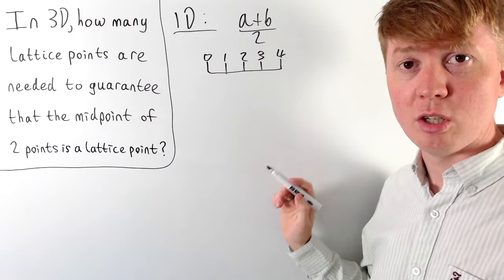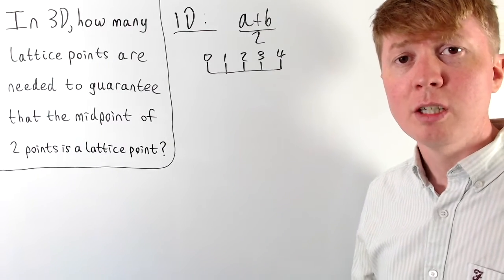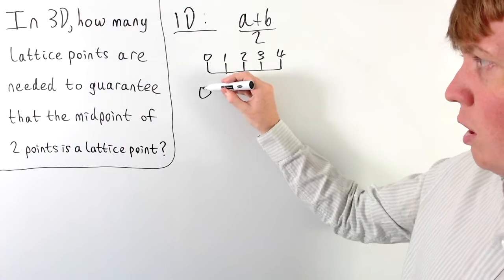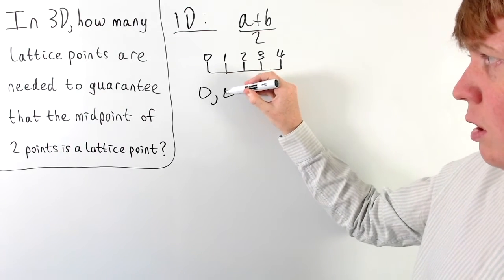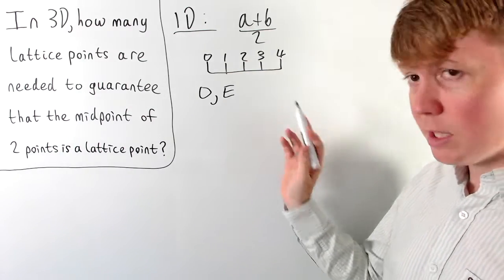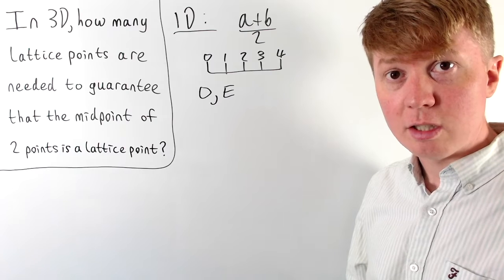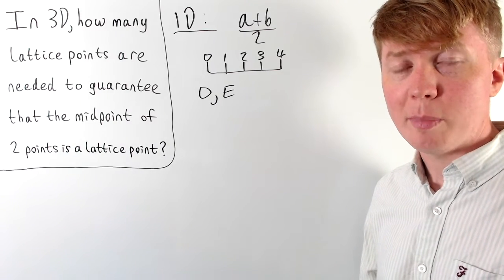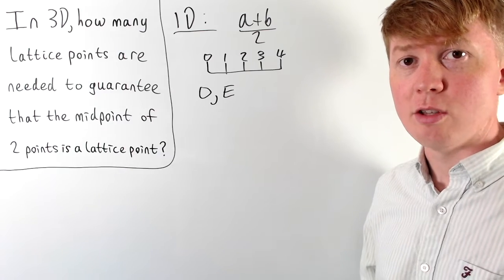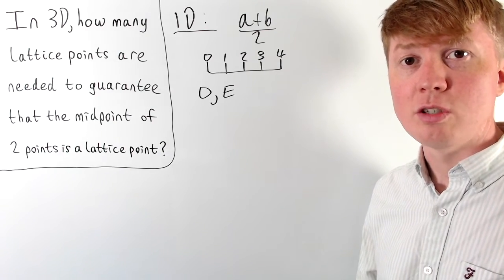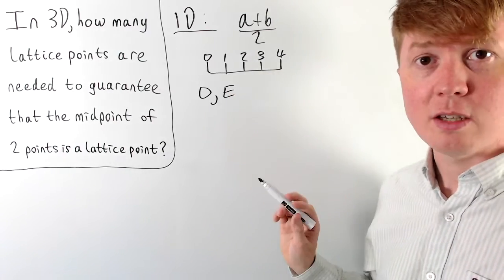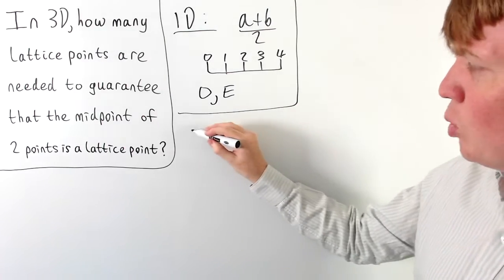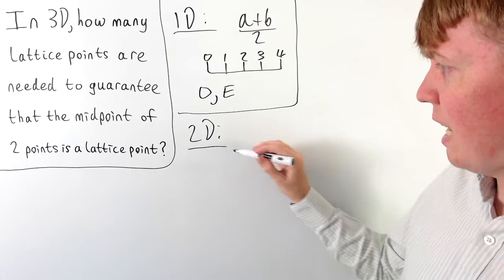We only need three integers in our set in one dimension to guarantee that one of our midpoints is also going to lie on the lattice. If you had only two, you could have an odd number and an even number. But by the time we add a third integer, it either has to be odd or even, which means there will be a pair with the same parity so that their midpoint also lies on the lattice. So in one dimension the answer is three.